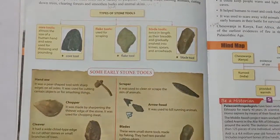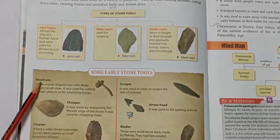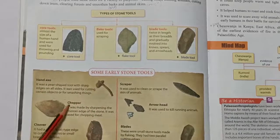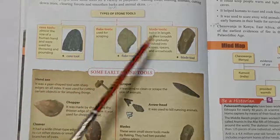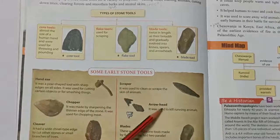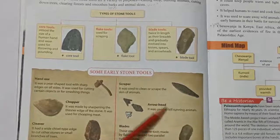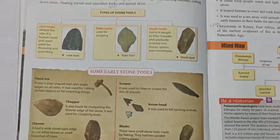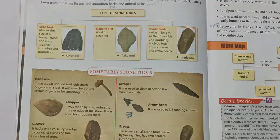They used flake tools, blade tools, and early stone tools which were used by hand. Hand tools were made from stone. A chopper was used for chopping meat — the stone tools were very big in size. A cleaver was used for branches and trees, a scraper and arrowhead were also used. Arrowheads were used to hunt running animals, and blades were used for sharpening. These were the tools used in the Paleolithic age.